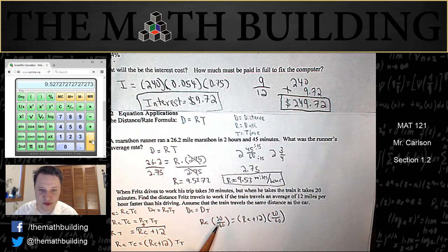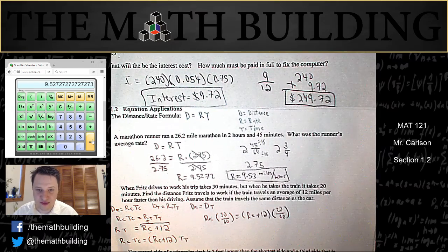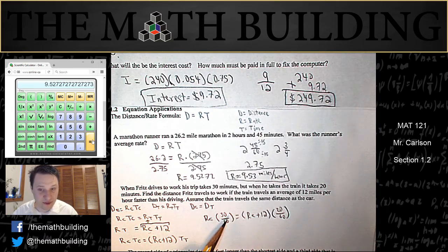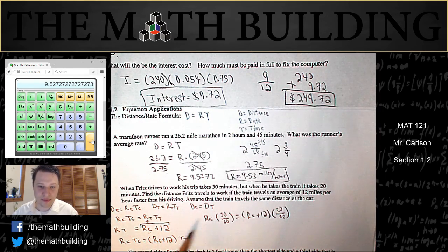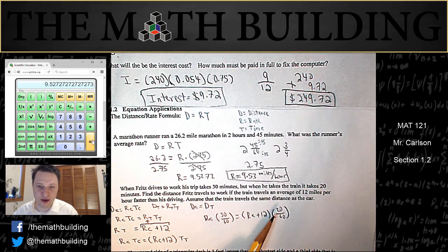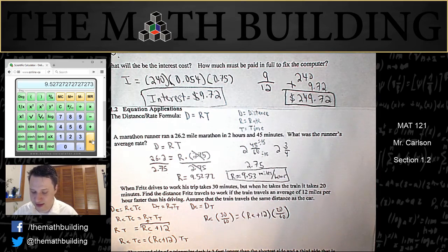Once again, I had to put this in terms of hours and so the car is half an hour and the train is a third of an hour. So I just went from here to here. tc became 30 over 60 and tt became 20 over 60 because I needed to put that into hours.